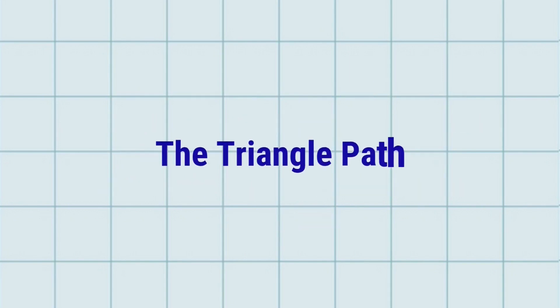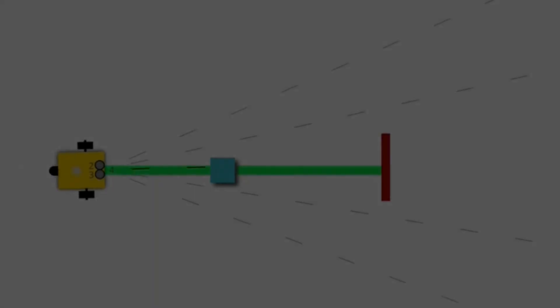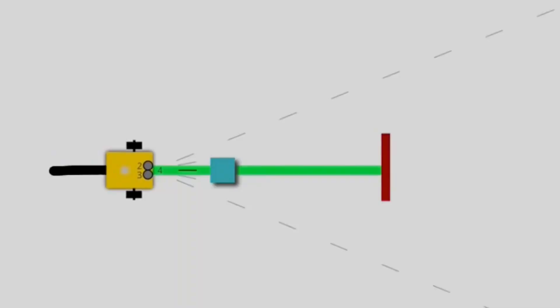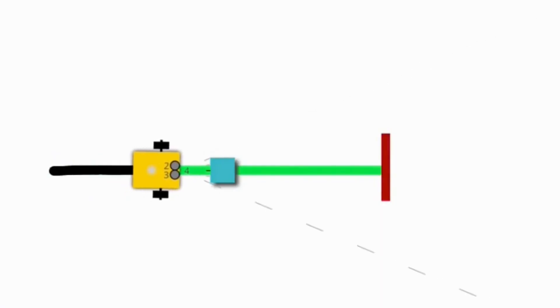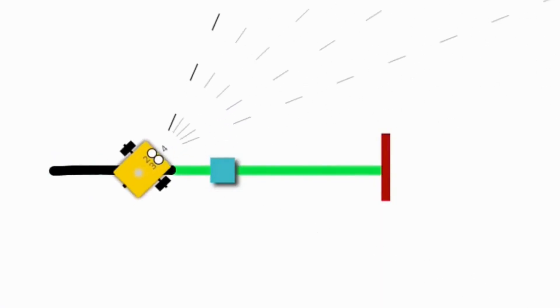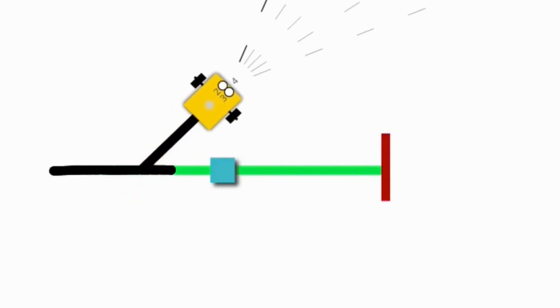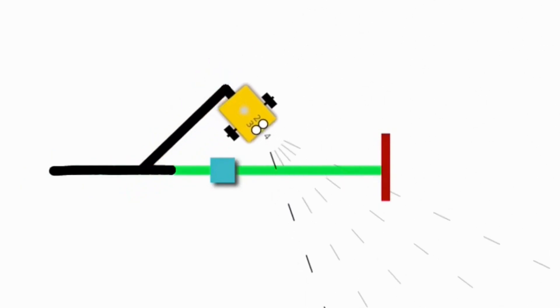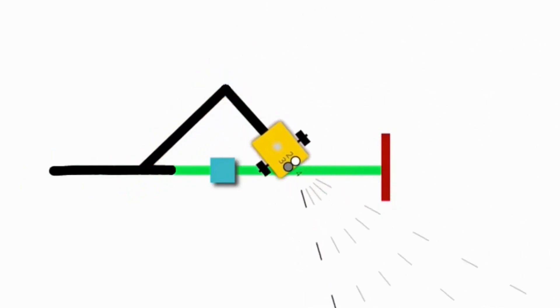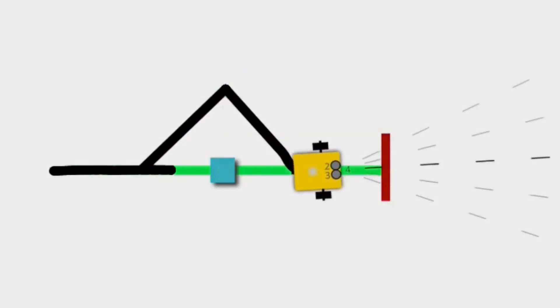The triangle path. The first method is the triangle path. It's a simple detour made of three straight segments, forming a sharp triangle around the obstacle. It's quick and easy to implement, but the turns are tight.